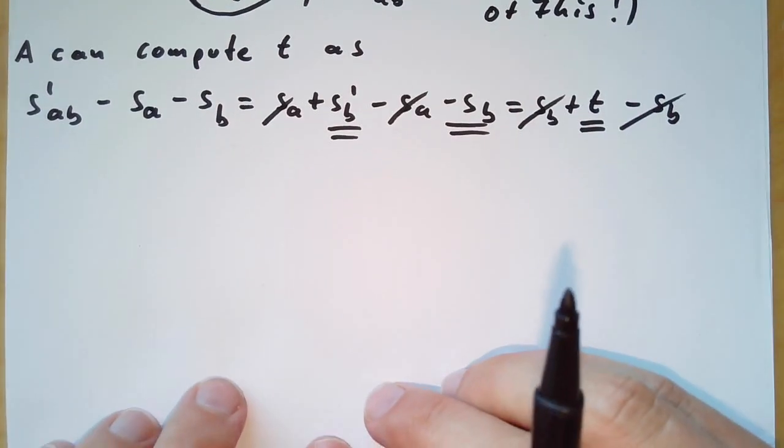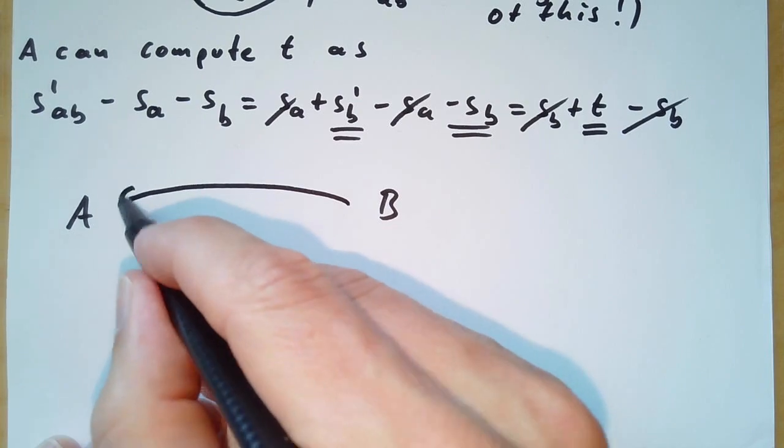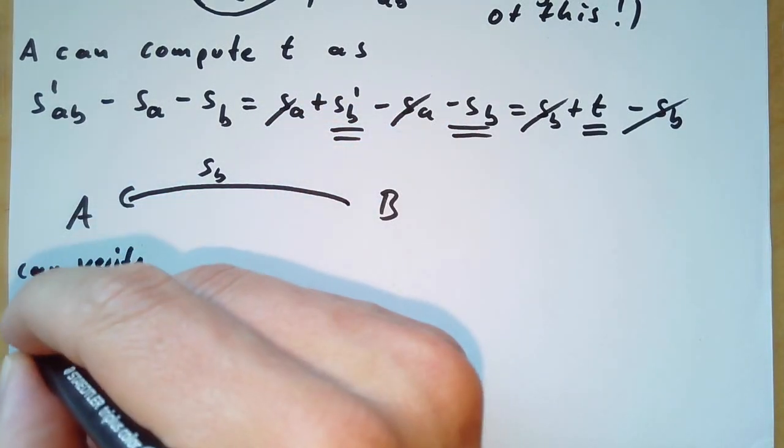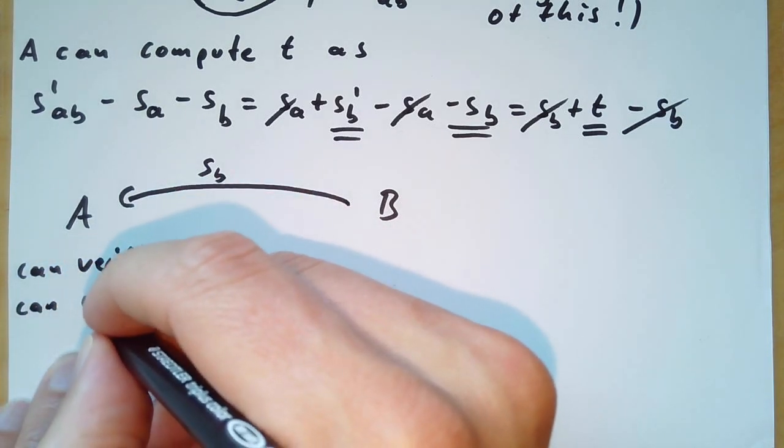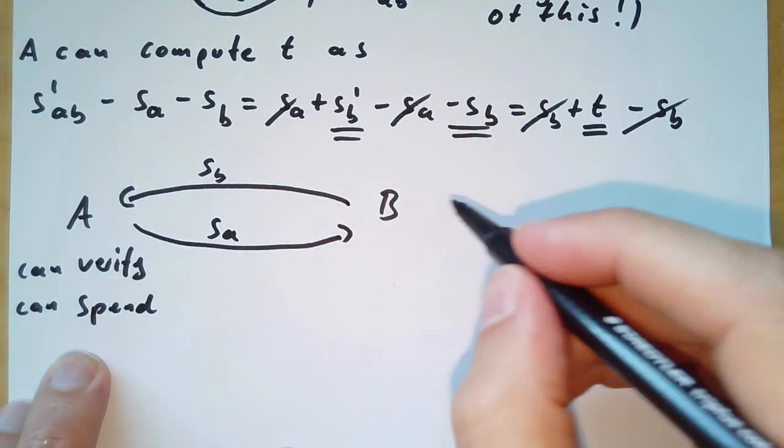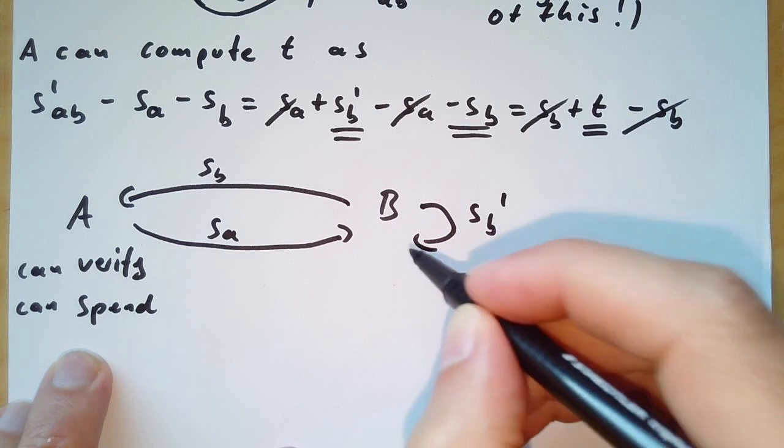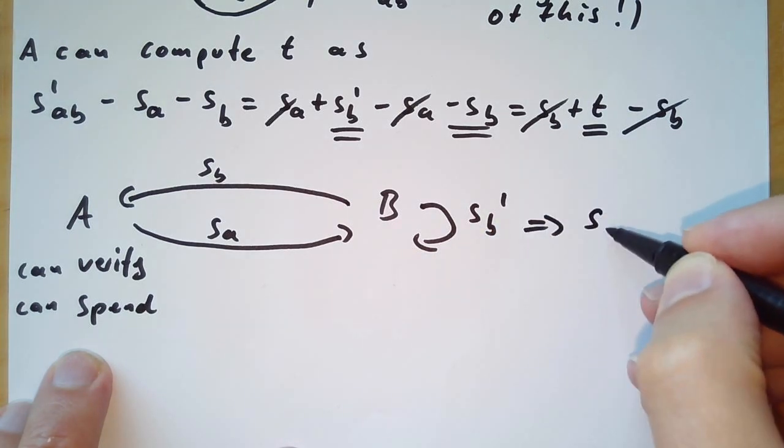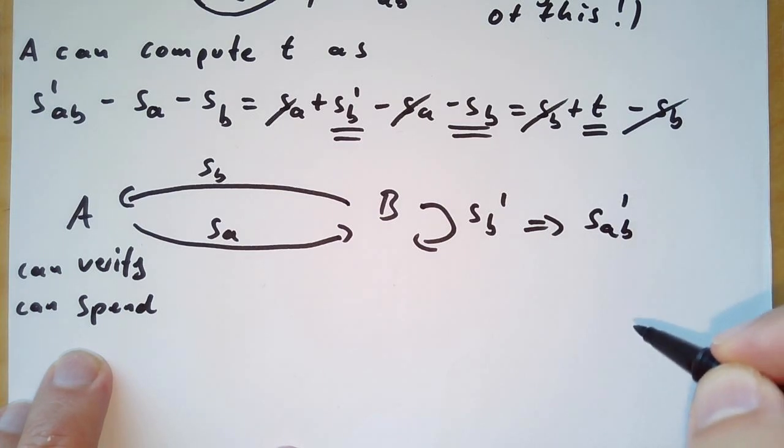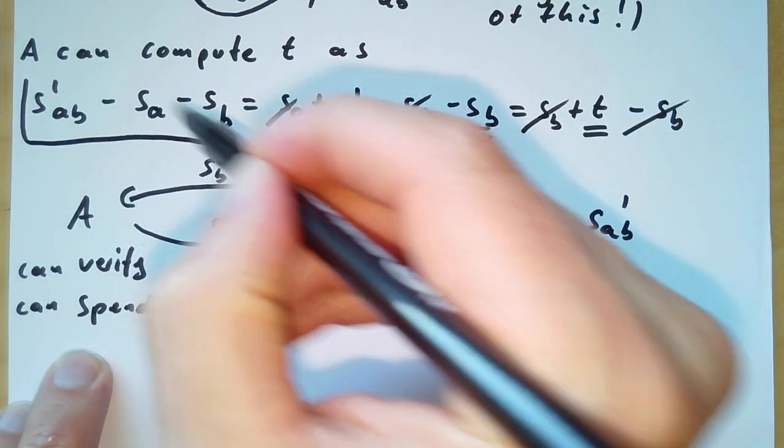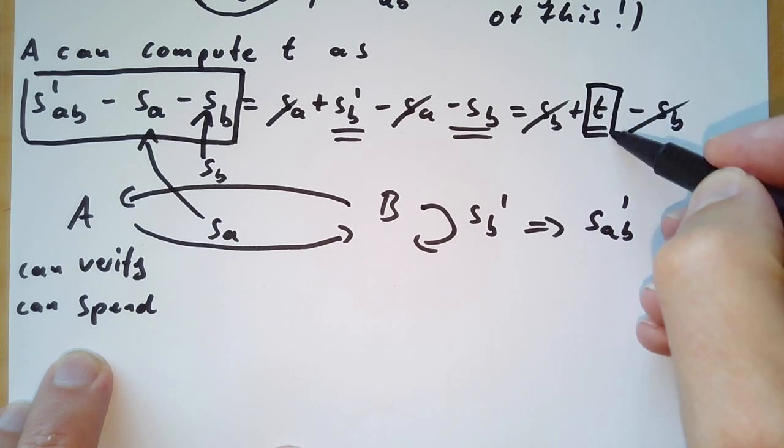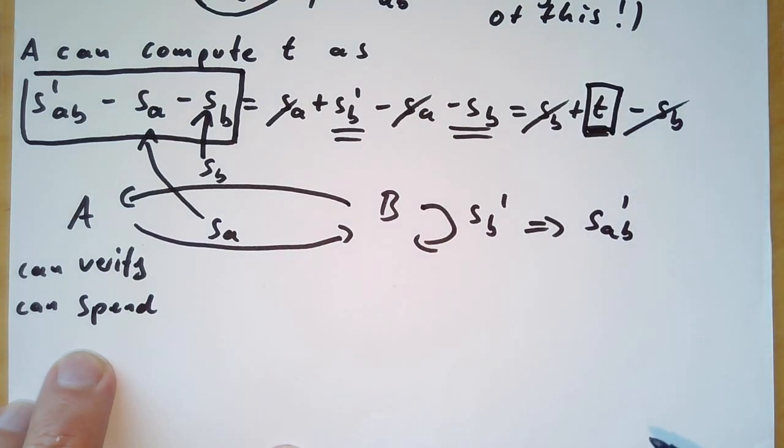So let us try to visualize this again. There is a and b, and a gets hold of the partial signature of b and can verify that this is actually something. A is able to spend from this multi-signature wallet because a obviously can compute sa. a sends over sa to b and b itself just produces sb' by adding the secret t to sb. And from this obviously b can compute sab', which is just adding these two signatures. Now as before, if a gets aware of sab', the values sa and sb are obviously known to a, so with the above equation a can compute the adapter secret t.